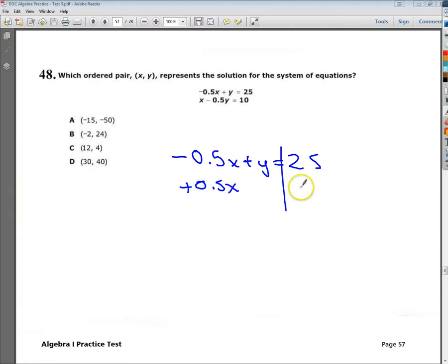So I'm going to add 0.5x, or .5x I should say. The reason I want to add 0.5x is because I'm trying to get y by itself. The relationship here is an add-subtract one, so I'm going to add both sides. So one of my setups is y equals 0.5x plus 25.